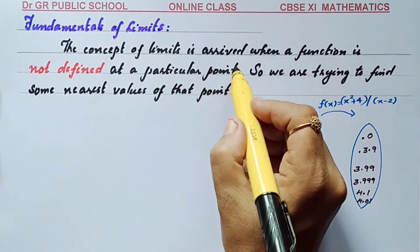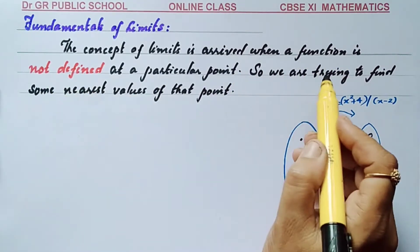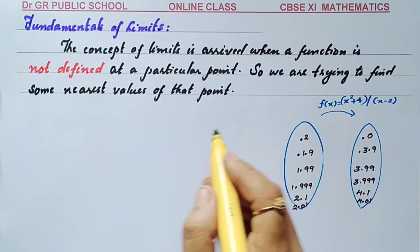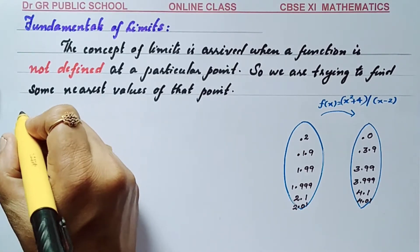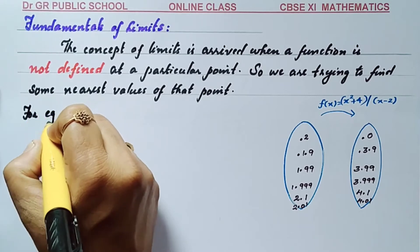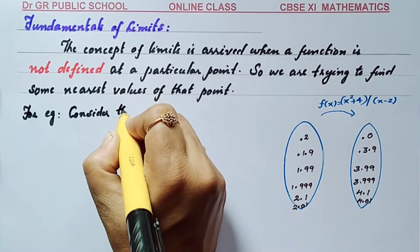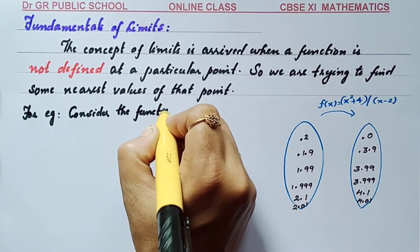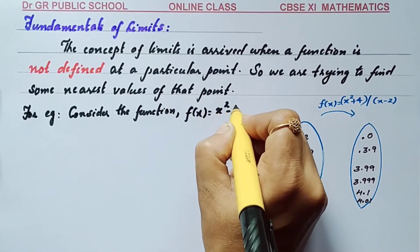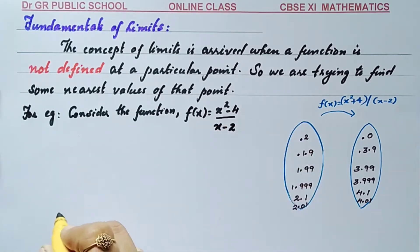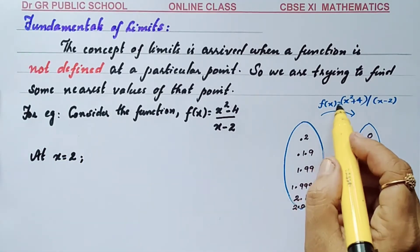The concept of limit arises when a function is not defined at a particular point. We try to find some nearest values of that point. For example, consider the function f(x) equals x squared minus 4 divided by x minus 2. I am going to find the value of the function at x equal to 2. Let f(x) be a function.